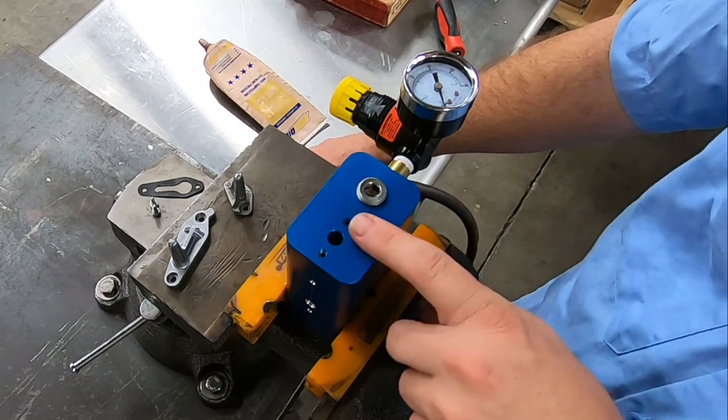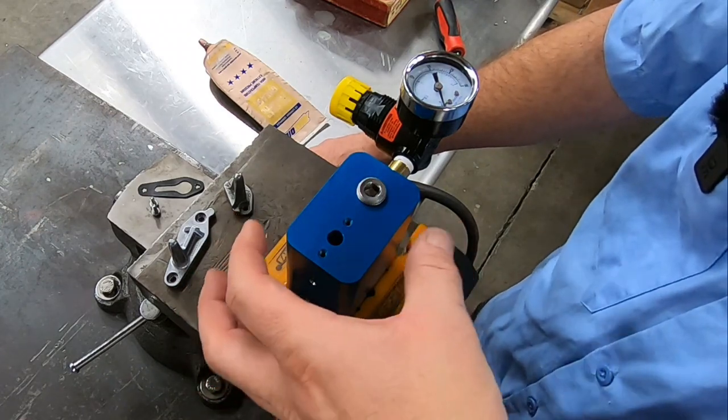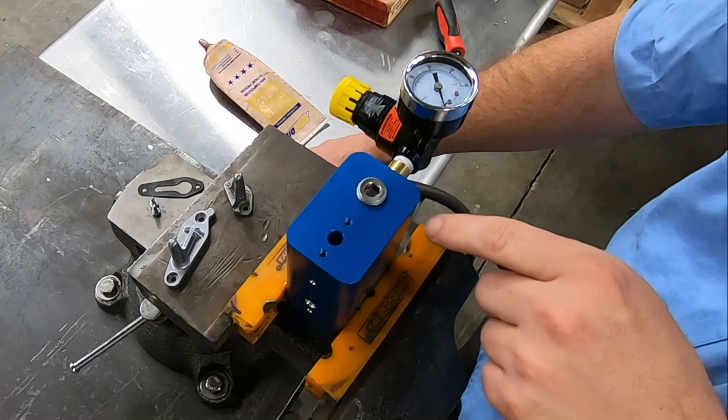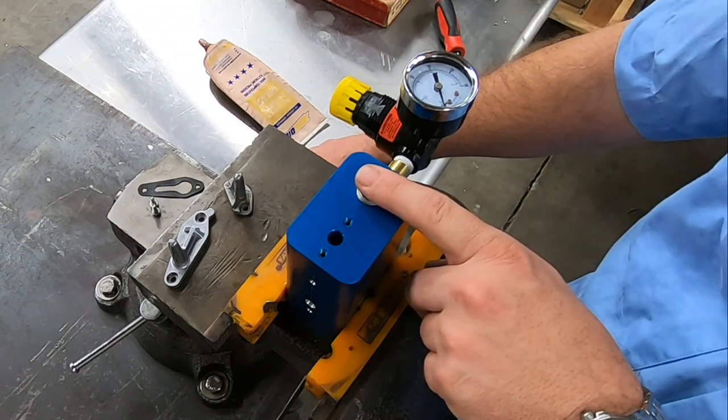You just want to make sure the inside of this is clean. If you're choosing to test it with oil so you can actually see the spray pattern, you'd remove this pipe plug here, fill this with oil, reinstall the pipe plug.